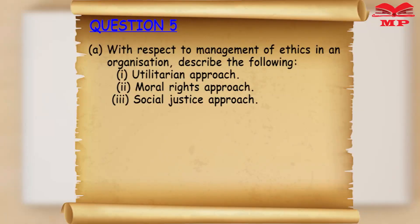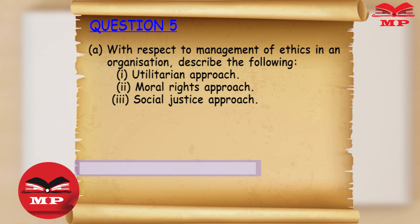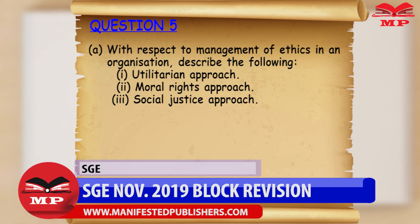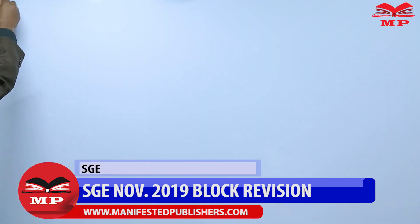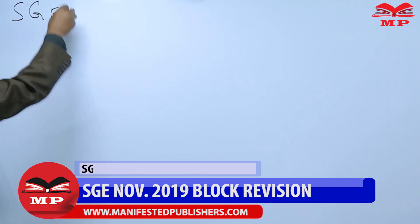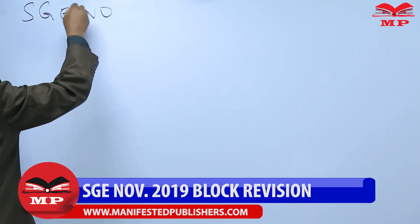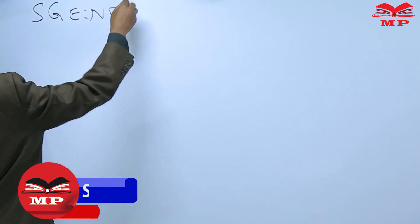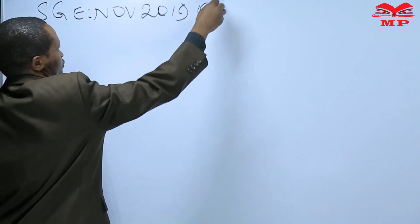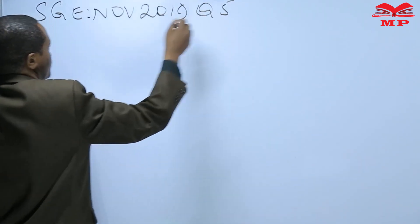Utilitarian Approach, Moral Rights Approach, Roman III, Social Justice Approach — Strategy Governance and Ethics, November 2019, Question 5.